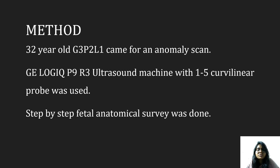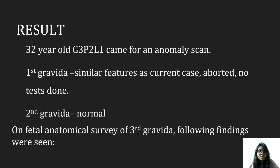A 32-year-old G3P2L1 came for an anomaly scan. A GE Logic P9R3 ultrasound machine with curvilinear probe was used, and a step-by-step fetal anatomical survey was done. In the 1st gravida, findings were similar to the current case, which was aborted and no tests were done. The 2nd gravida was normal. On anatomical survey of the 3rd gravida, the following findings were seen.